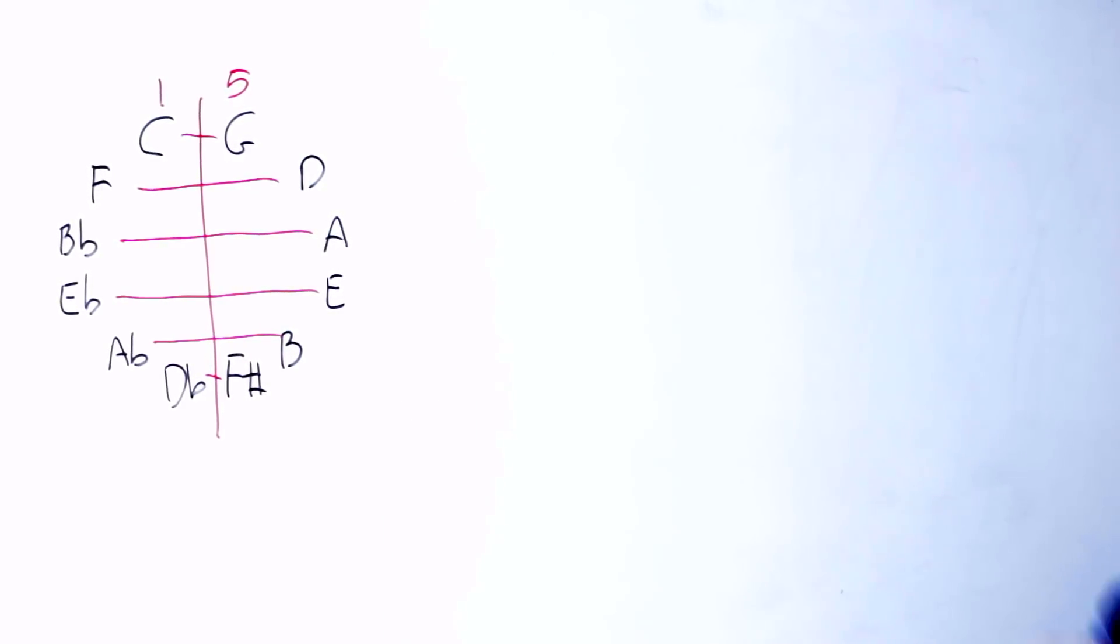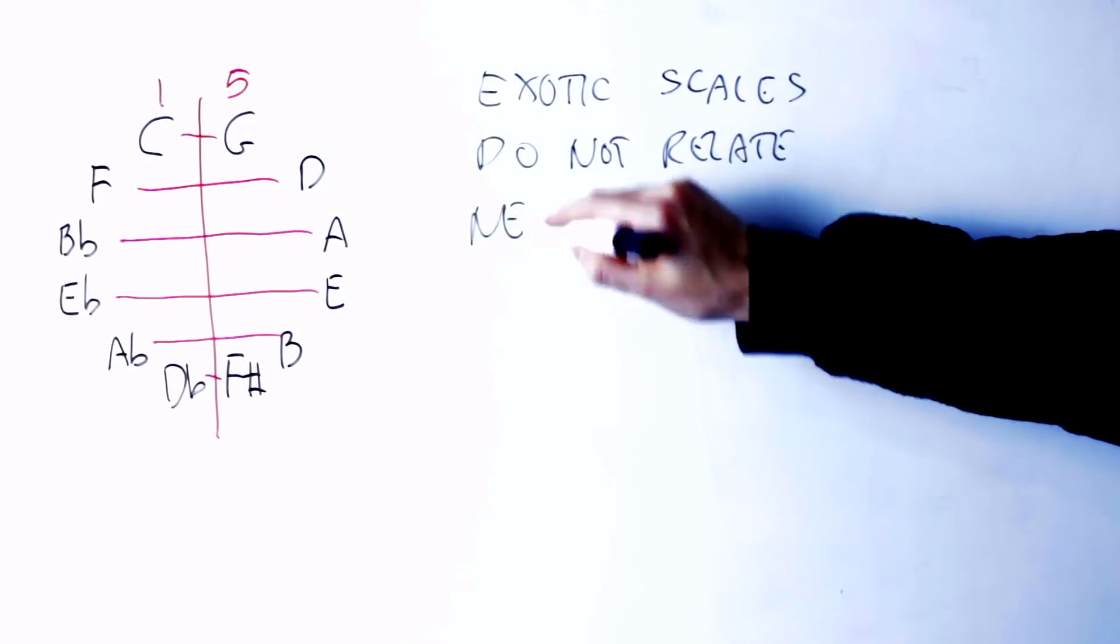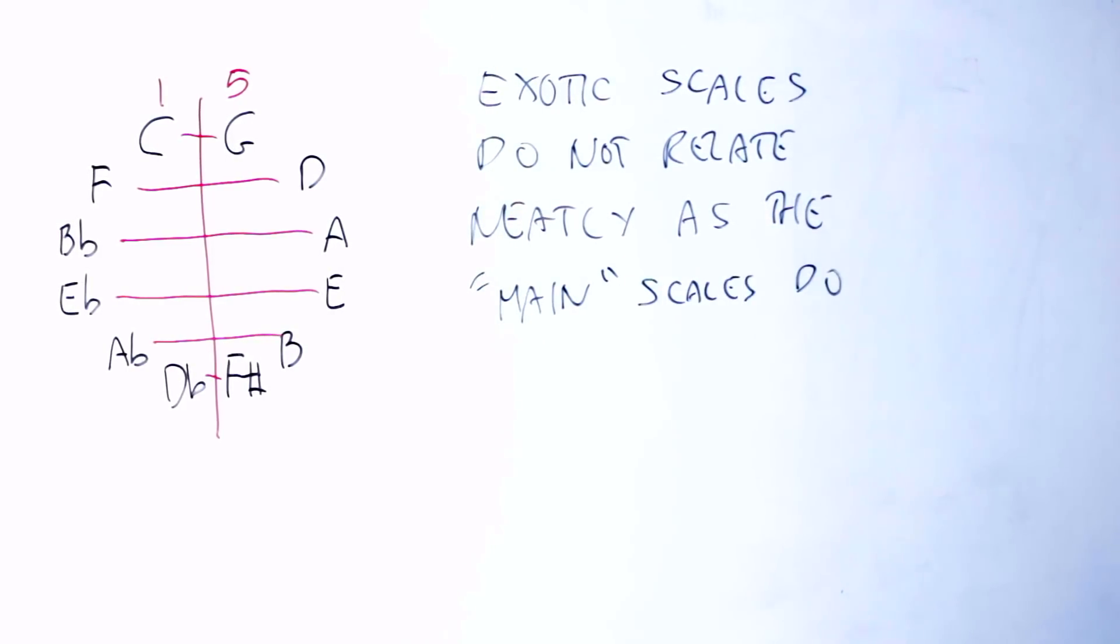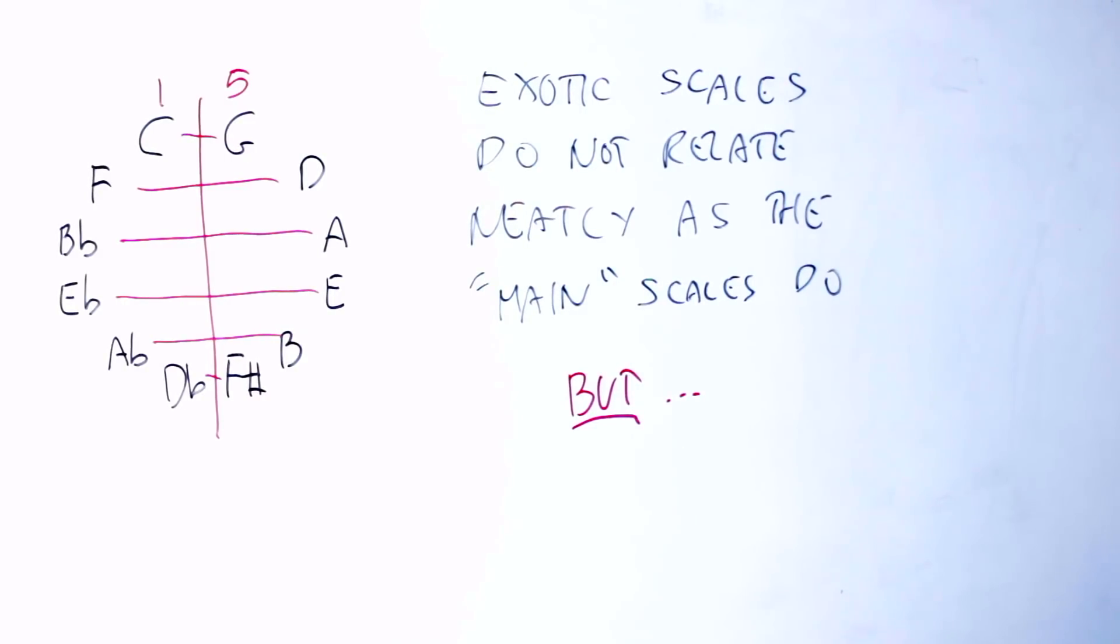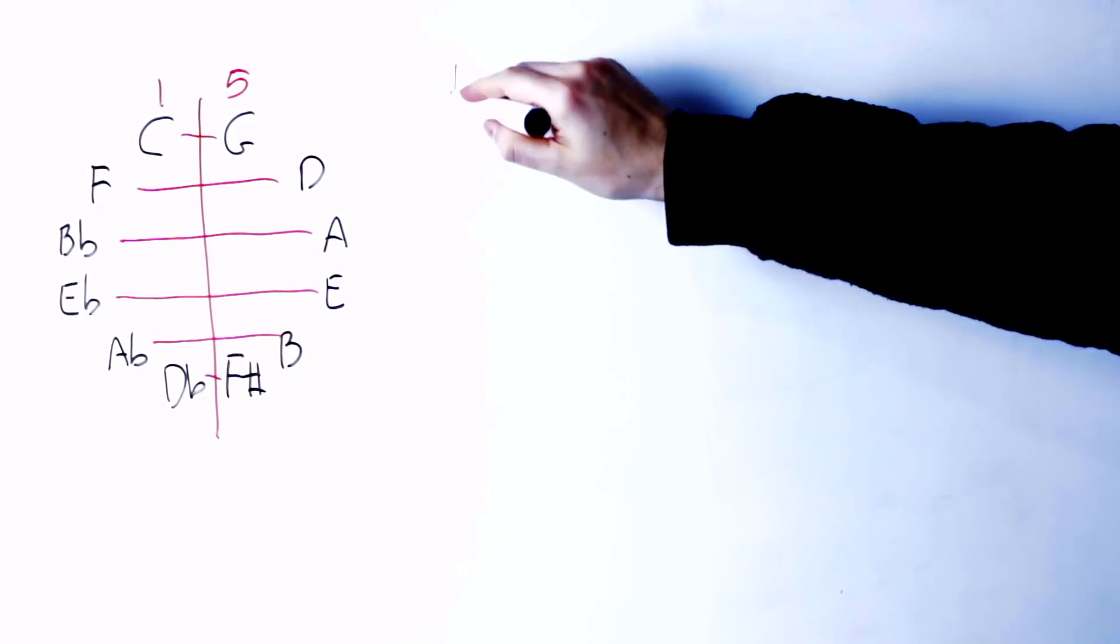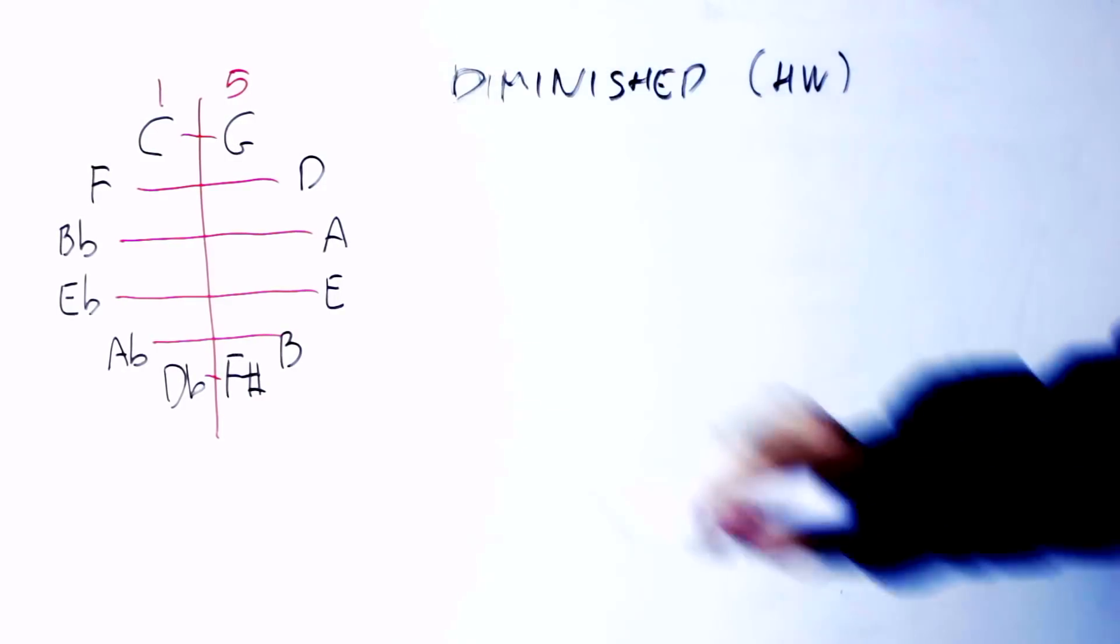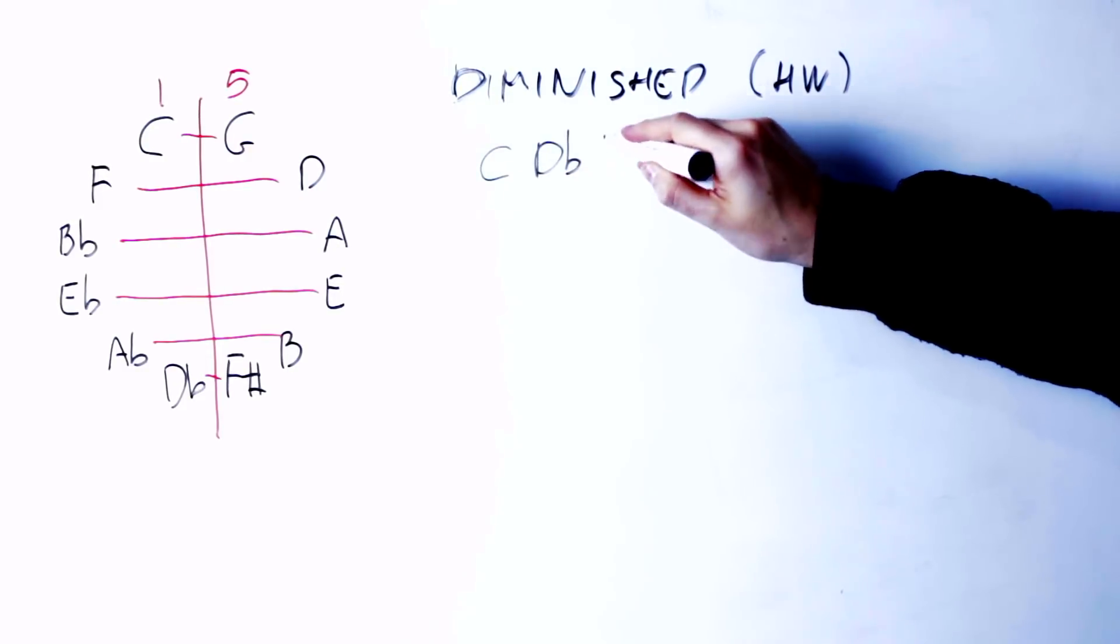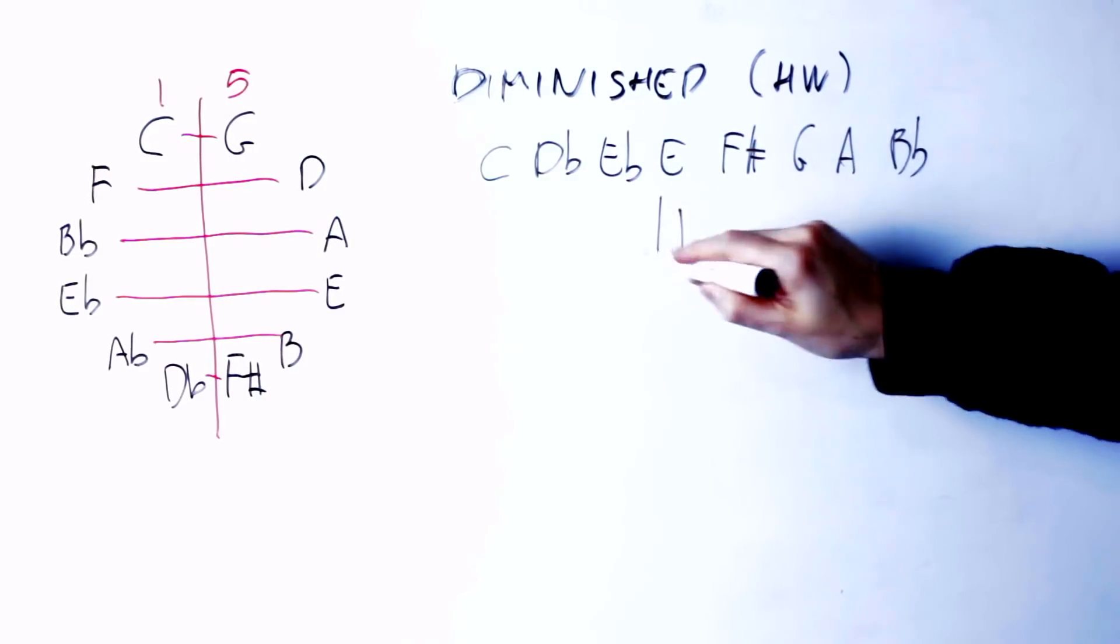So you see that the exotic scales like Hungarian major and minor and Neapolitan major and minor do not present the same nice and tidy pattern as the main scales of the tonal system. But other scales that are in use in music react much better to negative harmony. So, for instance, if I take a diminished scale, the half whole version, I have C, D flat, E flat, E, F sharp, G, A, B flat.